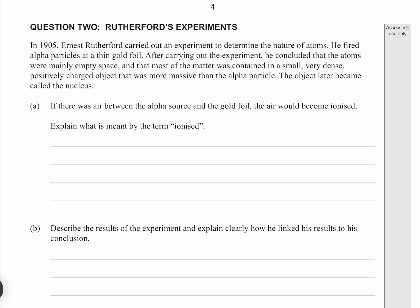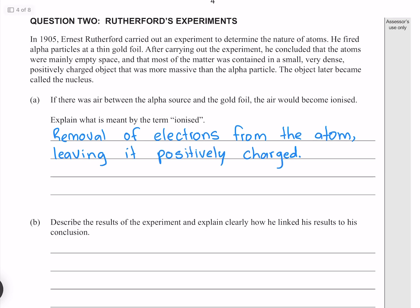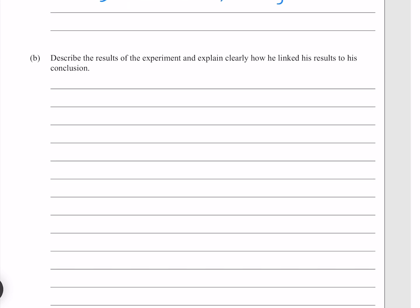If there was air between the alpha source and the gold foil, the air would become ionized. Explain what is meant by the term ionized. This is the removal of electrons from the atom, leaving it positively charged. Describe the results of the experiment, and explain clearly how he linked his results to his conclusion. Rutherford had three main observations, from each of which he drew an important conclusion. Because most alpha went right through unaffected, the atom must be mostly empty.